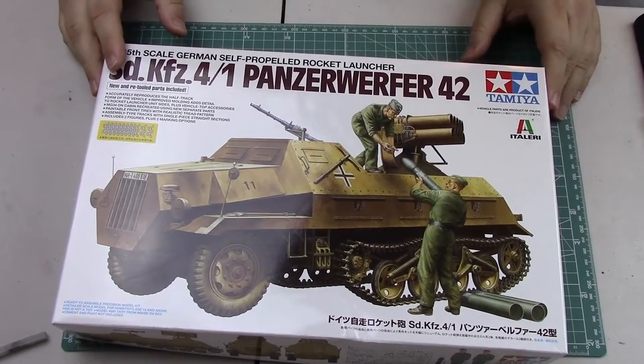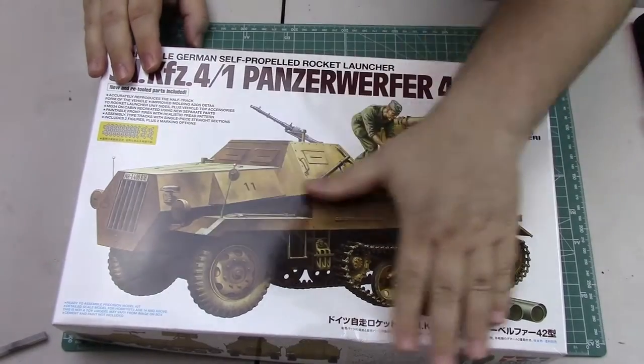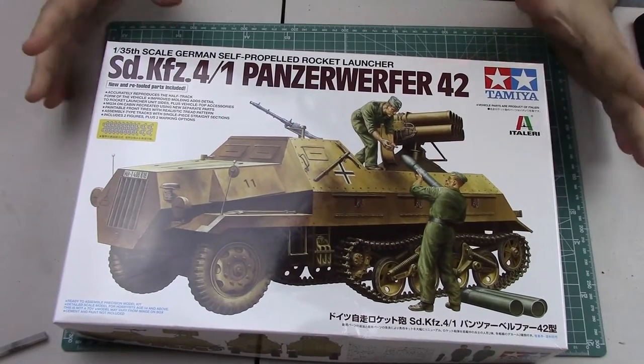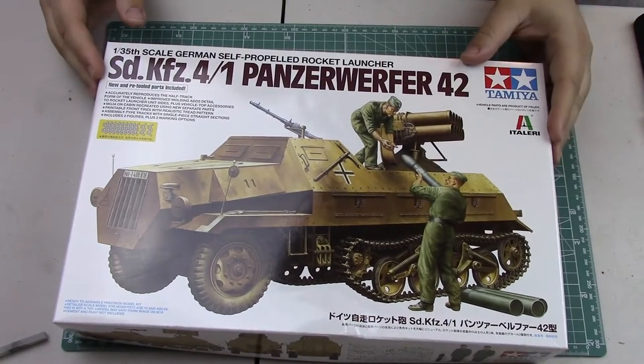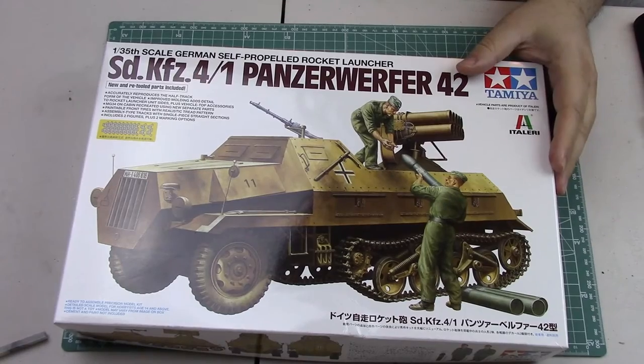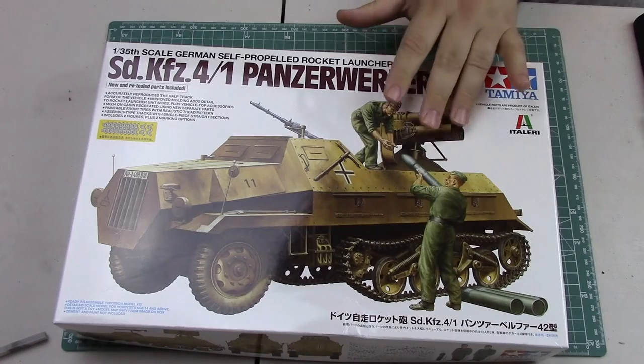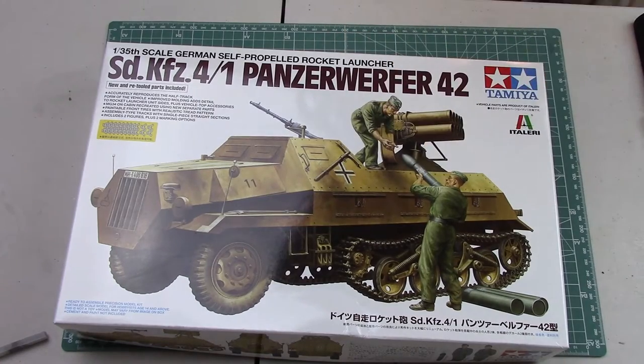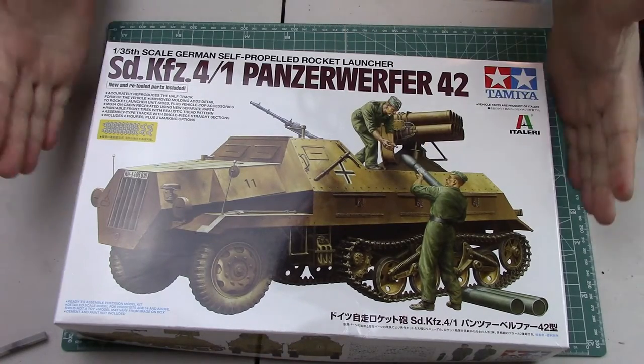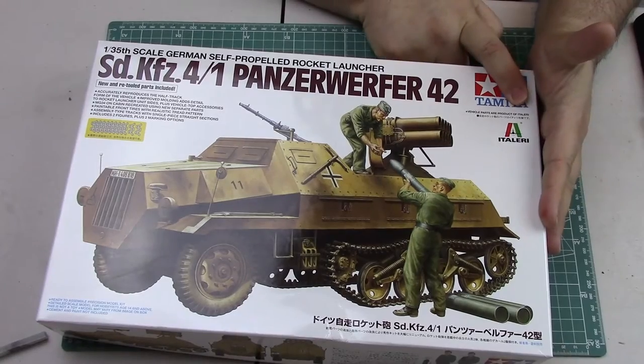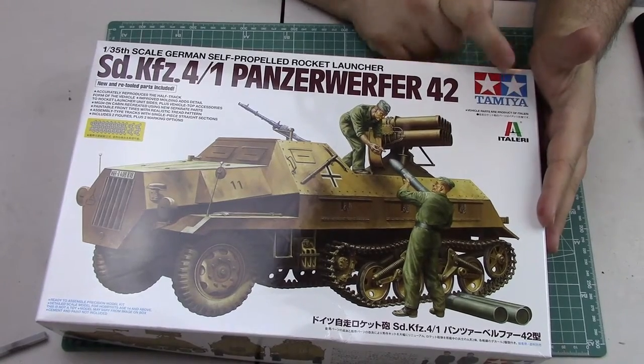Or just special vehicle 4 version 1 with the rocket launcher 42, which is the 15 centimeter rocket launcher that had a ton of explosive power. The vehicle itself I'm actually not that familiar with. It's obviously a half-track, much lighter than the Schwerer Wehrmacht Schlepper. I believe these began service in 1942-1943.